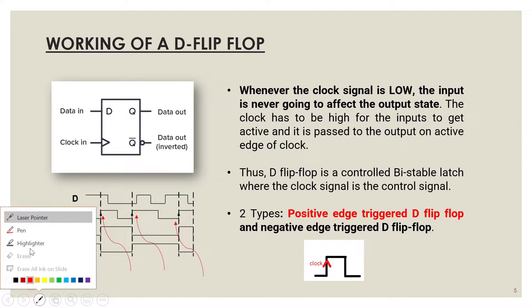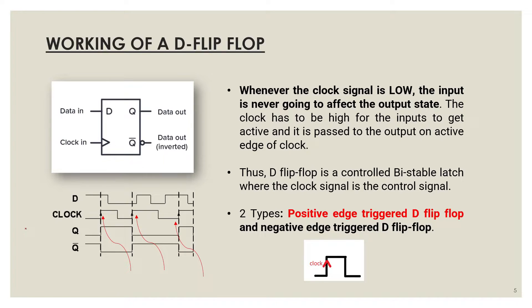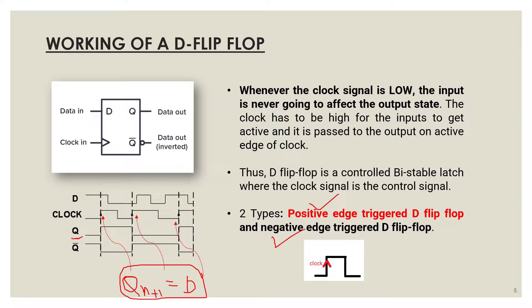It is very simple to form the equation for the next state Qn+1. The present state is Qn, so the next state Qn+1 equals the data present at the previous clock edge — nothing but D. So Qn+1 = D. There are two types of D flip-flop: positive edge triggered and negative edge triggered, based on the nature of the clock.